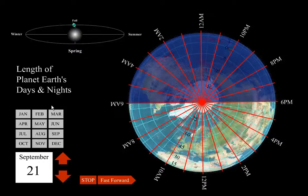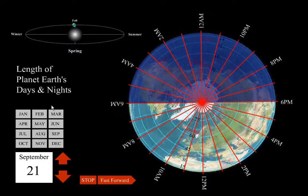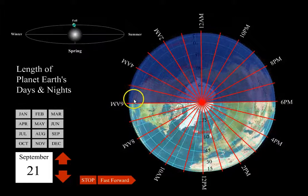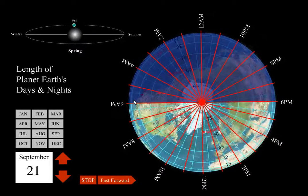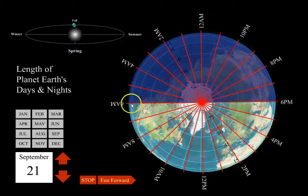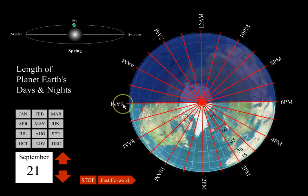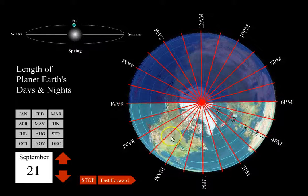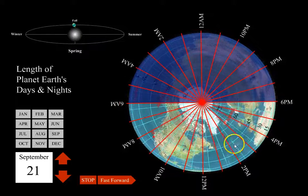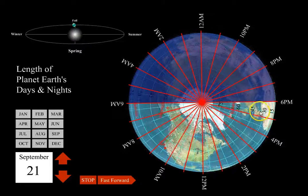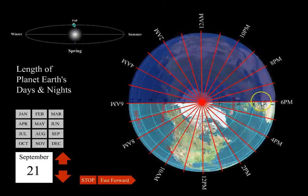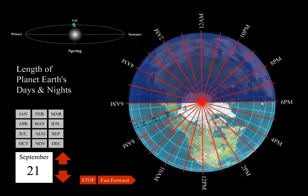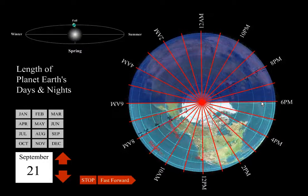So all those latitudes we talked about are going to rotate through the same amount of daylight. Sunrise is around 6 a.m., and all these latitudes are rotating through until they reach sunset here at 6 p.m. — so that is a 12-hour day.